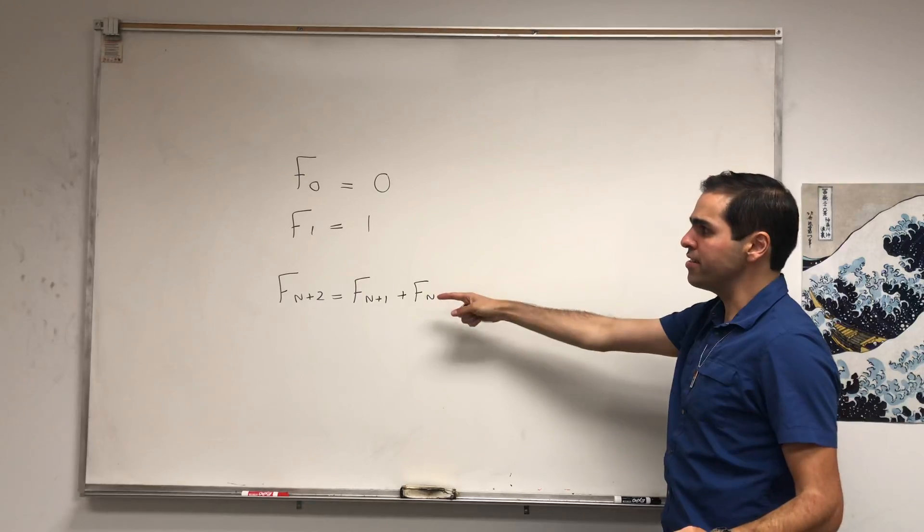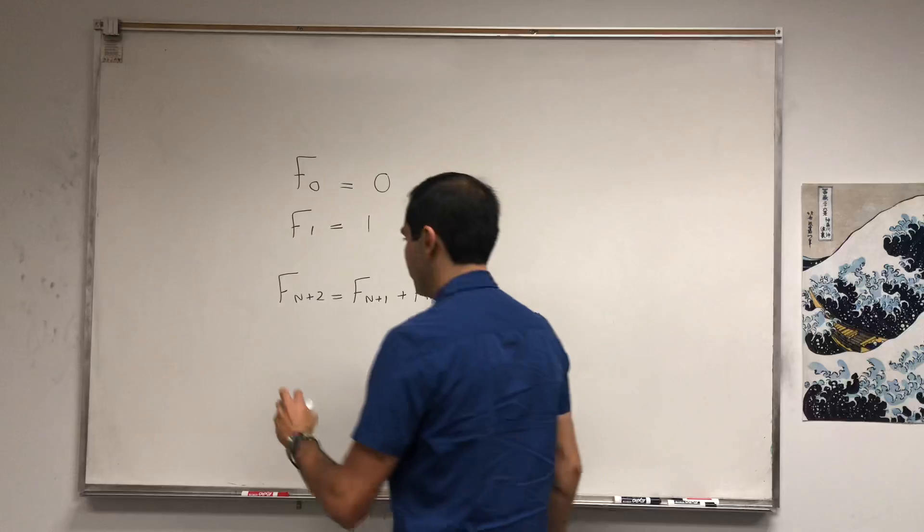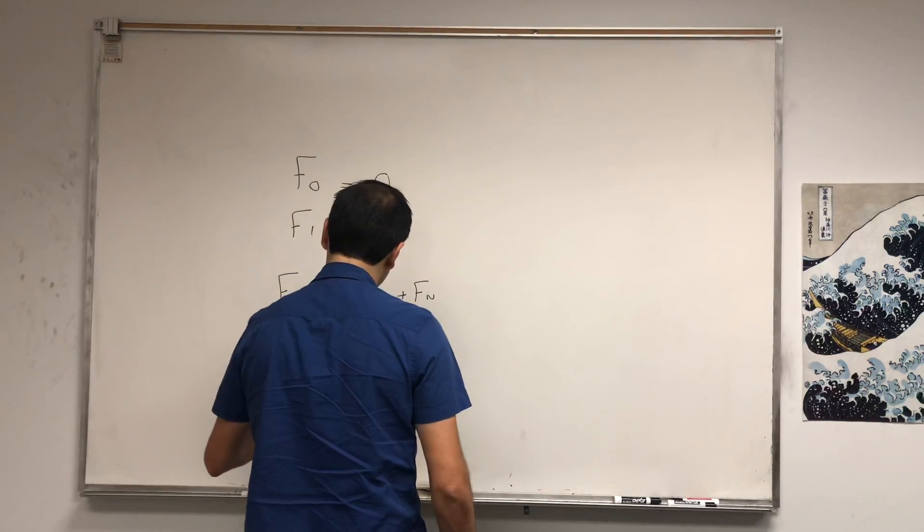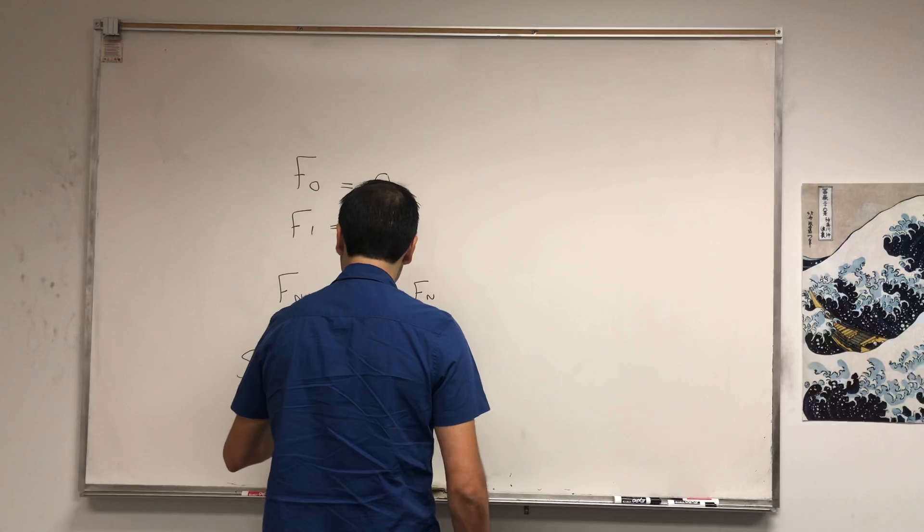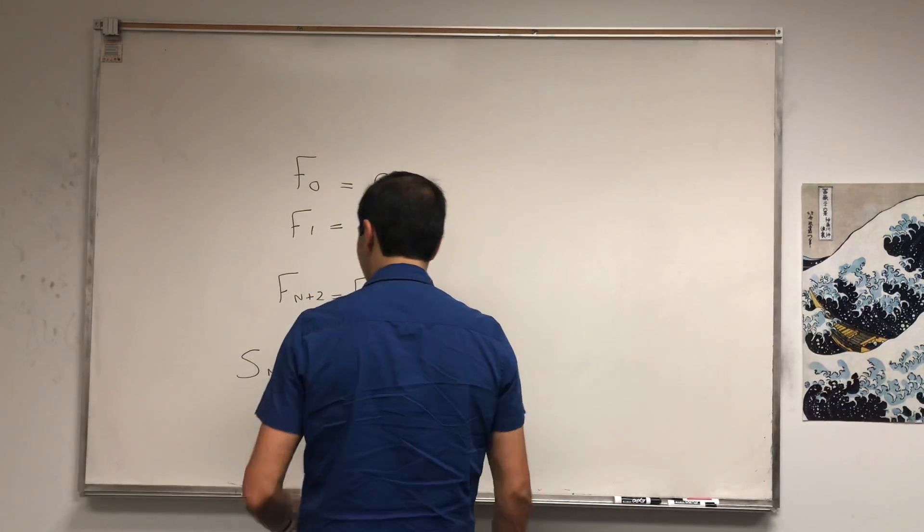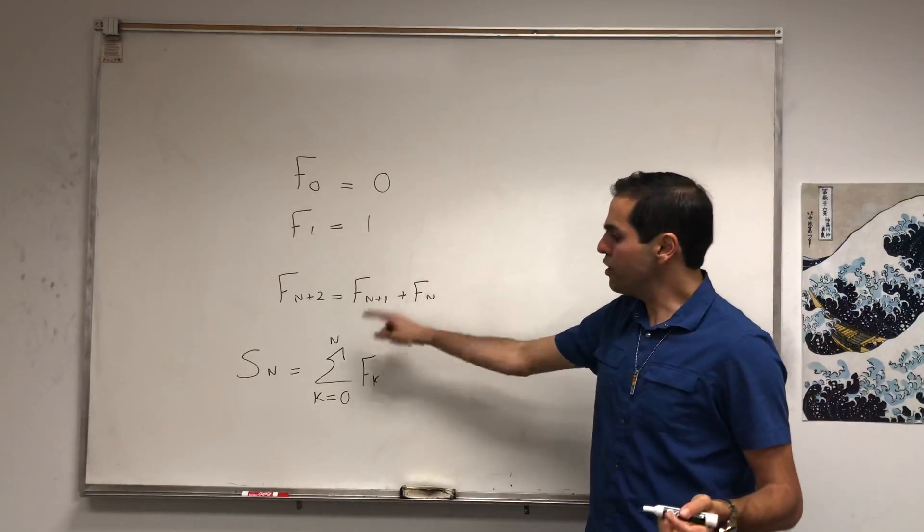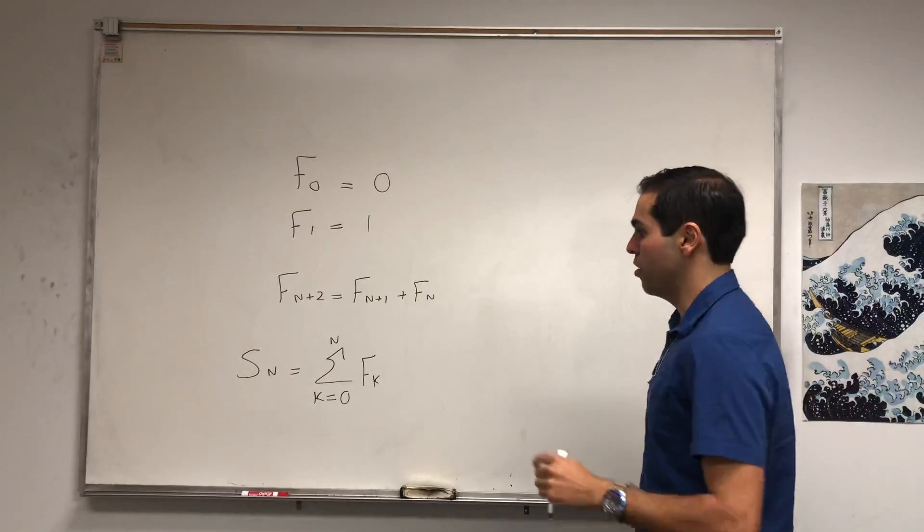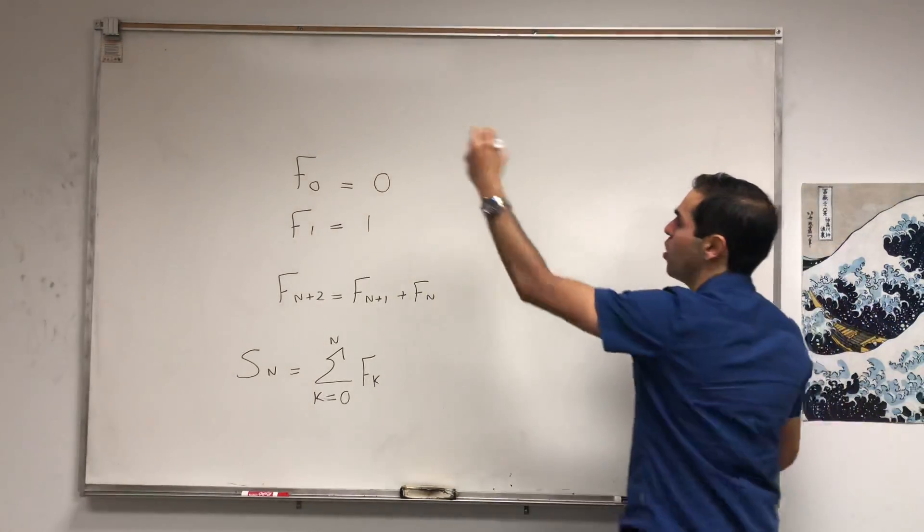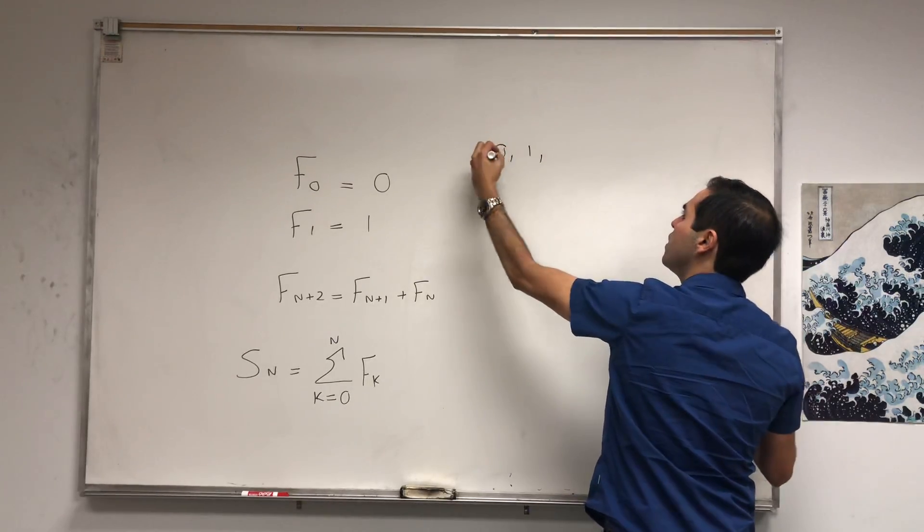Let Sn be the sum from k=0 to n of Fk. The question is, is it possible to find Sn easier than by summing up stuff? But let's just motivate this a little bit. Remember the Fibonacci sequence: 0, 1, and then you sum this 1, and then 2.